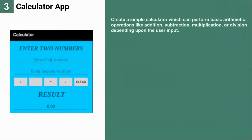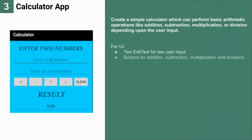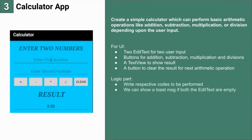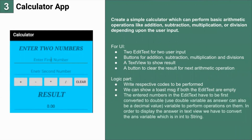The next app is a calculator app. Create a simple calculator which can perform basic arithmetic operations like addition, subtraction, multiplication, or division depending on the user input. For UI: two edit texts for user input, buttons for addition, subtraction, multiplication, and division, a text view to show the result, and a button to clear the result for the next operation. For the logic part, write respective codes for each operation. Show a toast message if both edit texts are empty. The entered numbers must first be converted to double, as the answer can be a decimal value. To display the answer in the text view, convert the answer variable from integer to string.